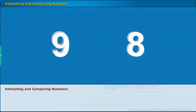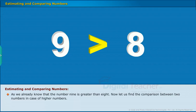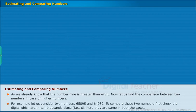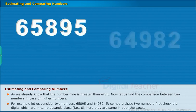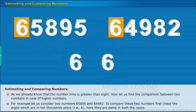Let us know how to estimate and compare numbers. As we already know that the number 9 is greater than 8, now let us find the comparison between two numbers in case of higher numbers. For example, let us consider two numbers 65895 and 64982. To compare these two numbers, first check the digits which are in 10,000's place, that is 6. Here, they are same in both the cases.